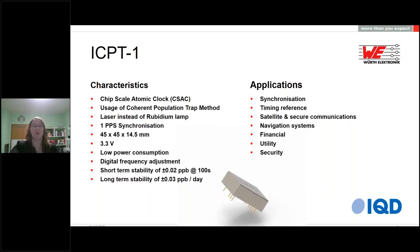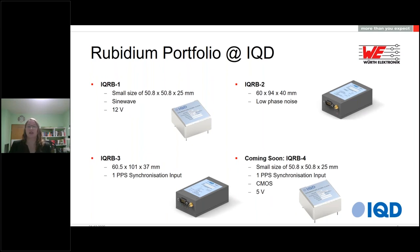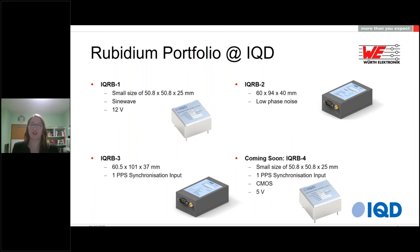With the ICP-T1, we are adding something new to our general rubidium portfolio at IQD. We already have the IQRB1, one of the smaller standard rubidiums at 50 by 50 by 25 mm with a standard 12-volt input. We also have the IQRB2 and IQRB3, which are larger but offer better low phase noise and additional advantages. The IQRB3 also includes a 1 pps synchronization input. Coming soon in January is the IQRB4, which will close the gap between the IQRB1/2/3 and the ICP-T1 with a 5-volt version, an additional CMOS output, and a 1 pps synchronization input.